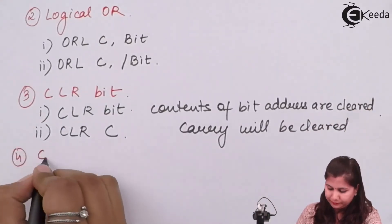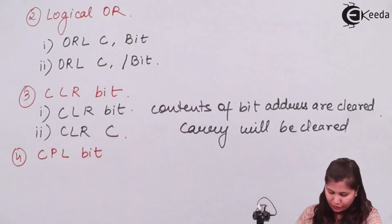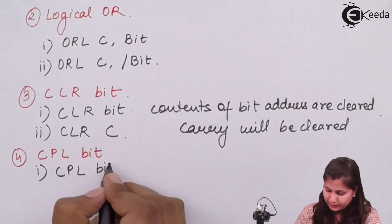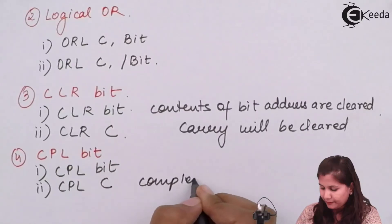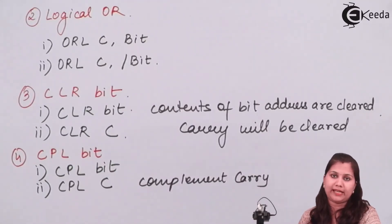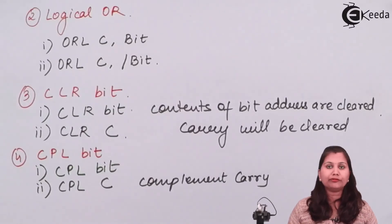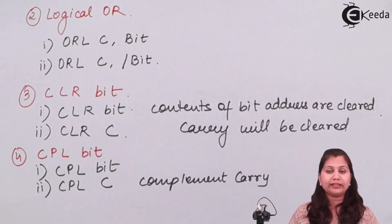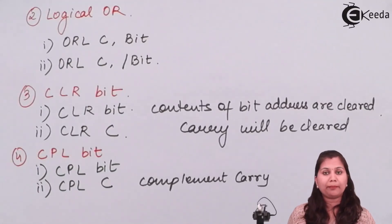Next we have CPL. CLR is for clearing and CPL is for complementing. We have two forms: CPL bit and CPL C. CPL C complements the carry flag — if it is set it will be reset, and if it is reset it will be set; 0 changes to 1 and 1 changes to 0. CPL bit complements the contents of the specified bit address. These are all the bit manipulation instructions because all these operations are performed on the bit-addressable memory locations of the 8051 microcontroller.